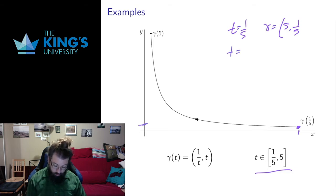What happens if t equals 2? That's going to be 1/2, 2. That's already going to be well over here. What happens if t equals 3? 1/3, 3? That's going to be over here.